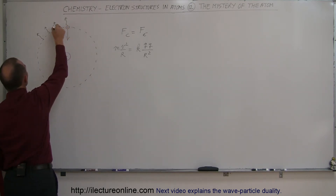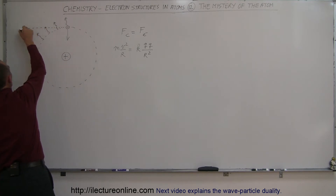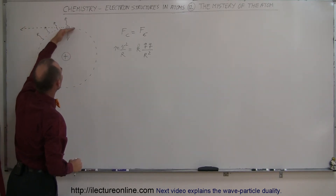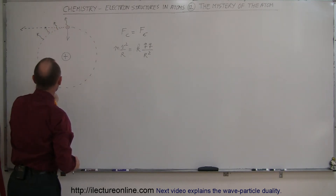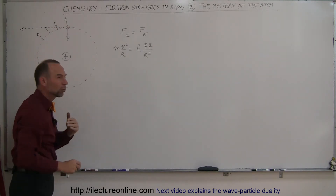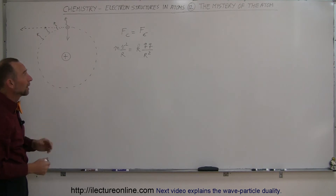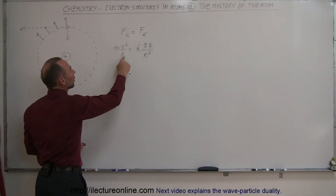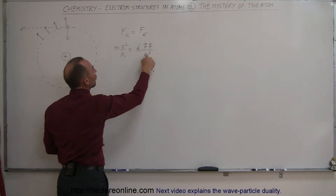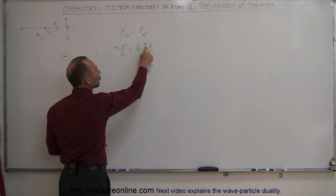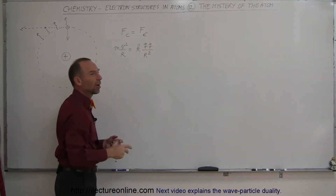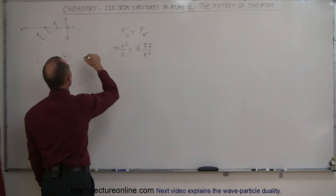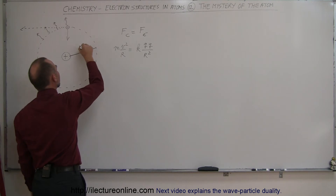If that wasn't the case, the electron would follow Newton's first law and just go in a straight path. But because of the attractive forces, the electron is being pulled around into a circular orbit, which means it's being accelerated. So we can say that the centripetal force, which is mv² over r, is equal to kqq over r². qq is simply the charge of the electron and the charge of the proton, which is a single charge. k is just a constant, and r is the radius of the orbit.